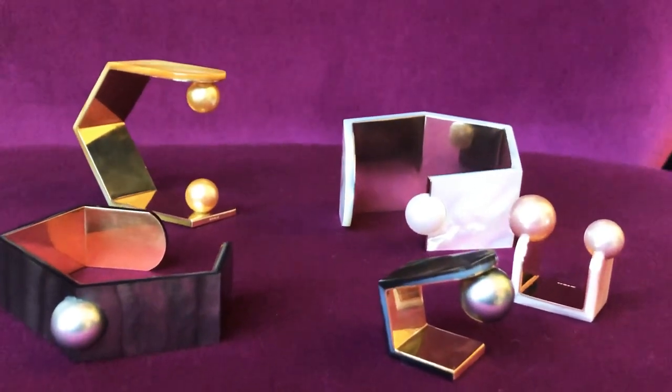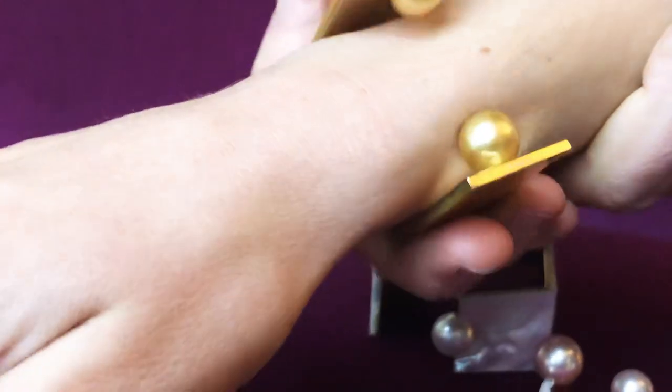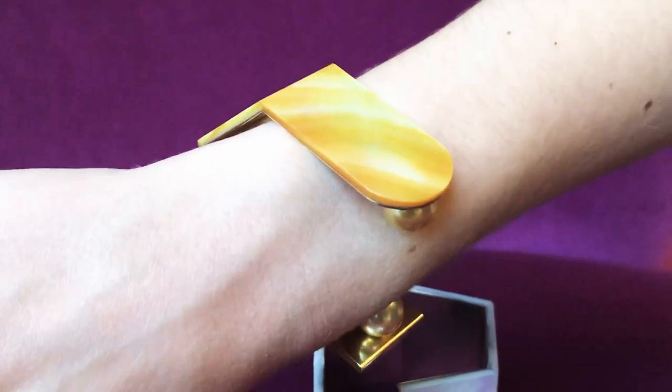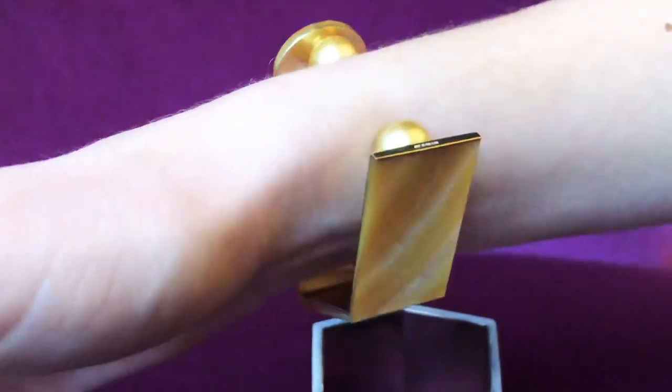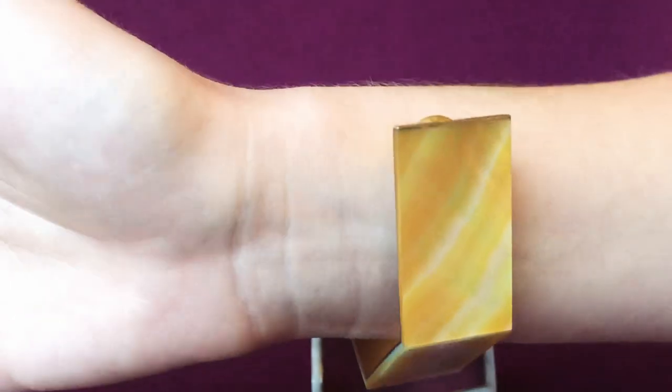But how do you wear these jewels? Well, we're going to see how this bracelet fits onto the wrist. You will see that the pearls are in fact a functional part of the jewel because they hold the bracelet in place. I love the play of light between the mother of pearl and the pearl itself, making it a very minimalist but very dramatic piece of jewellery.